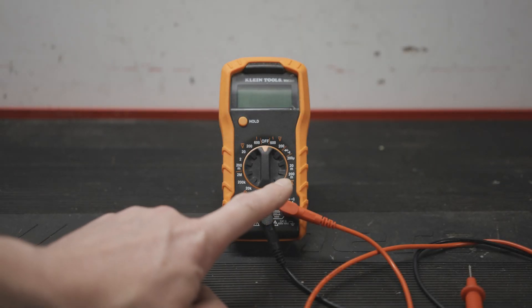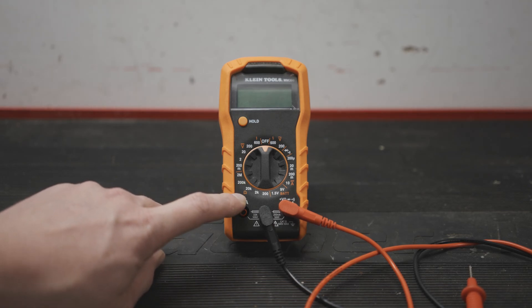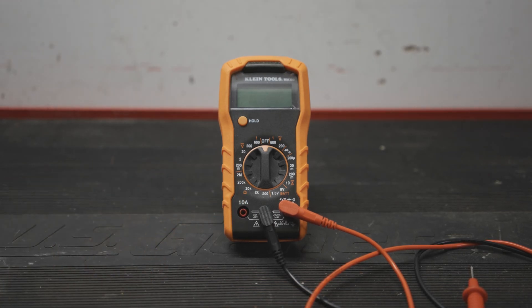Grab your multimeter and make sure that the positive lead is plugged into the port to measure ohms. This port is only for amps on my multimeter so it's pretty easy to select the correct one. Your multimeter may not look like this so just be sure that you have the correct port to measure ohms or resistance.